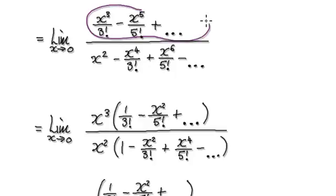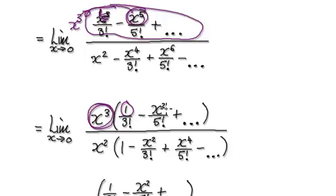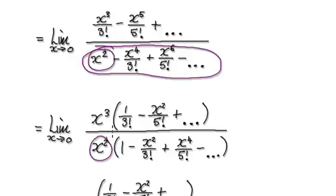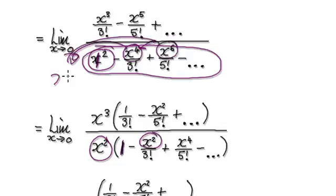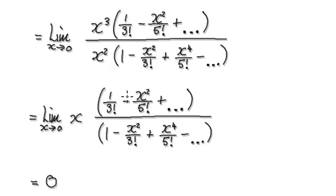Now looking at the numerator, you can factorize out x to the power of 3. So if you factor out x to the power of 3, the first term gives you 1, and what's left is x squared and so on. Then for the denominator, factorize out x squared — here you'd be left with 1, and then taking out x squared, what's left here is x squared, then x to the power of 4, and so on. That will then take you to the next simplified form.